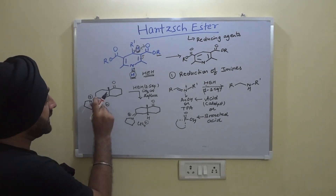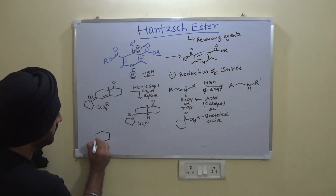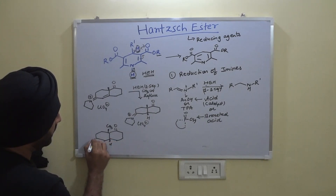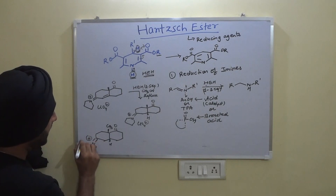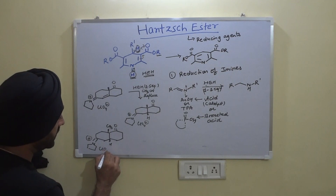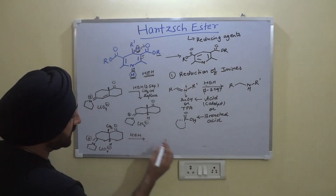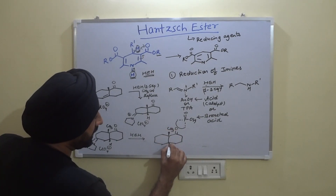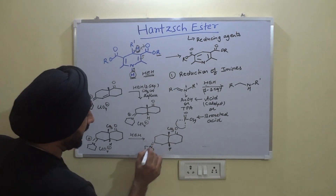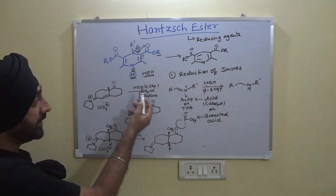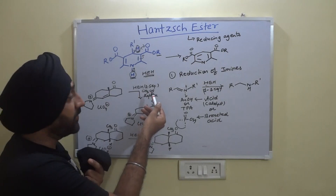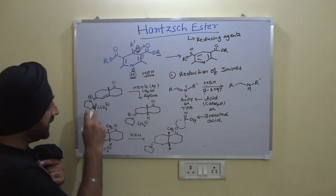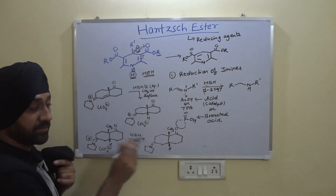If we have only an imine with no additional activated double bond, and subject it to reduction with Hantzsch ester, we would get the reduced imine as the sole product. Using only 1.2 equivalents, this selectively reduces only the imine. When no activated double bond is present, only the imine gets reduced.